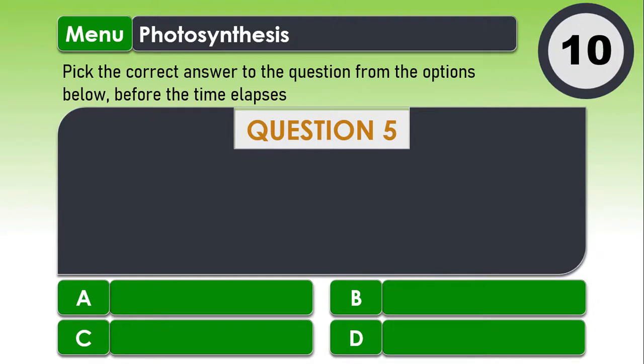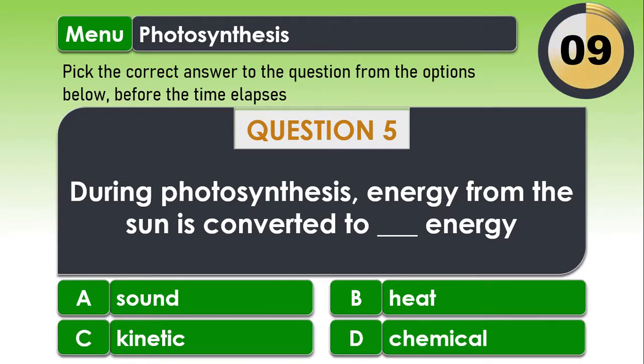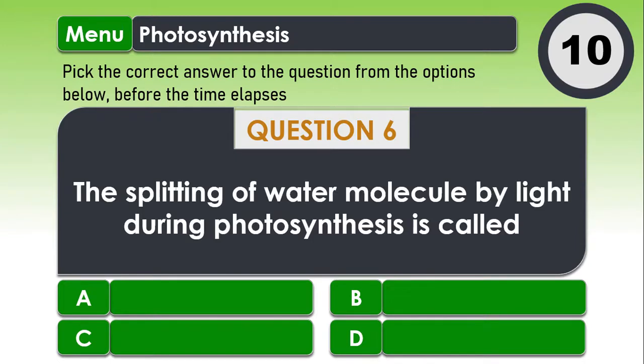Question 5. During photosynthesis, energy from the sun is converted to dash energy A. Sound B. Heat C. Kinetic And D. Chemical. The answer is D. Chemical.